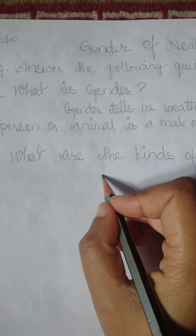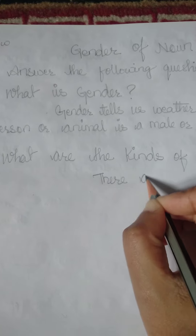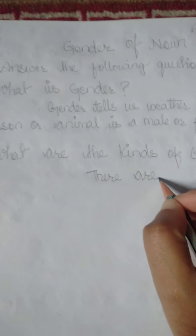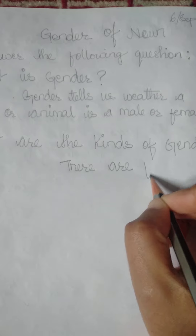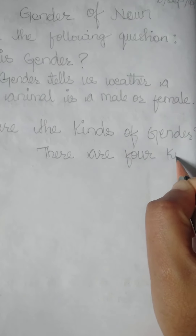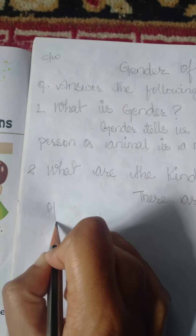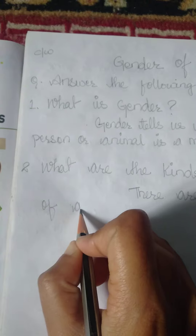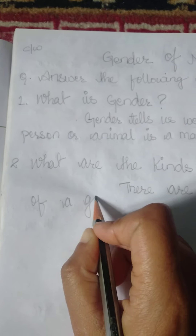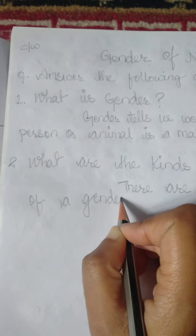The answer is: There are four kinds of gender. F-O-U-R, four, K-I-N-D-S, kinds, of gender, G-E-N-D-E-R.